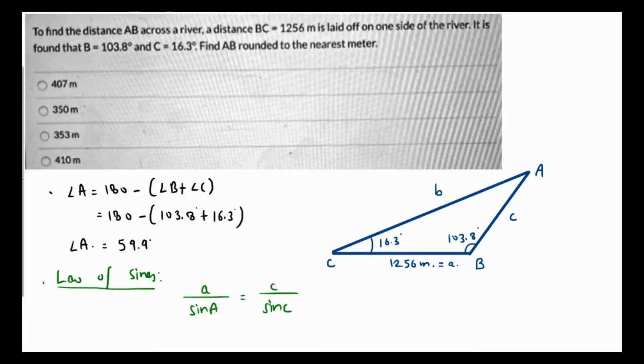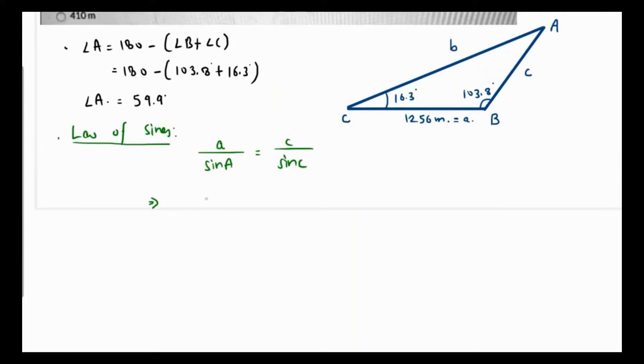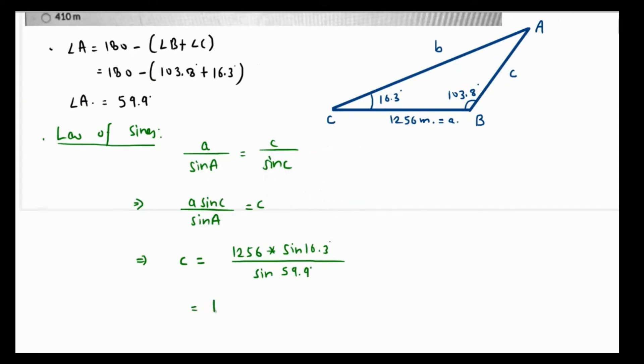Our intention is to find side c, so we'll cross multiply and get c isolated. So a sine C over sine A is side c. Side c will be equal to small a which is 1256 times sine C which is 16.3 degrees over sine of angle A which is 59.9 degrees.